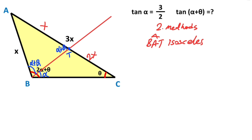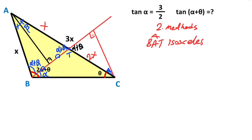At the beginning of the question, tangent alpha is given as 3 over 2. To use this property, I want to create a right triangle, so I draw a perpendicular line. This angle here is also alpha plus theta. After that I draw one more perpendicular line to create similar triangles. We know that these two parts are equal because of the isosceles triangle, and here there is also an angle bisector — these are the properties of an isosceles triangle. So let's call here beta; that means the corresponding angle here must also equal beta. After that let's call here points M and N.